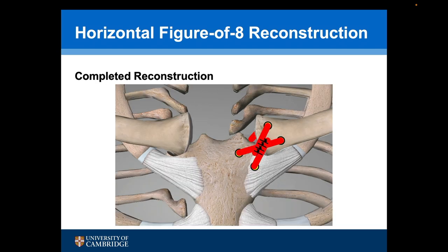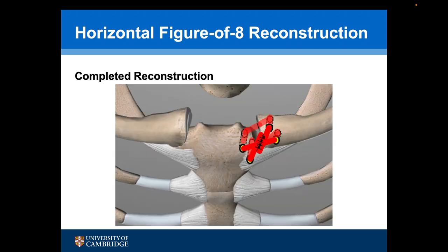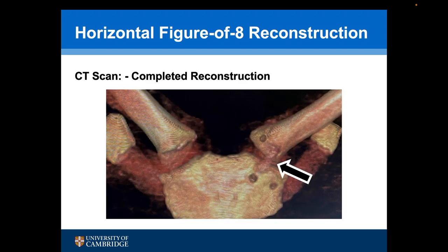This is the final configuration following a horizontal figure-of-eight hamstring tendon reconstruction for an anterior dislocation of the sternoclavicular joint. This is a post-operative CT scan where we can see the drill holes in the medial end of the clavicle and the sternum, and we can just see one of the limbs of the tendon graft passing from the superior sternoclavicular drill hole to the inferior clavicular drill hole.